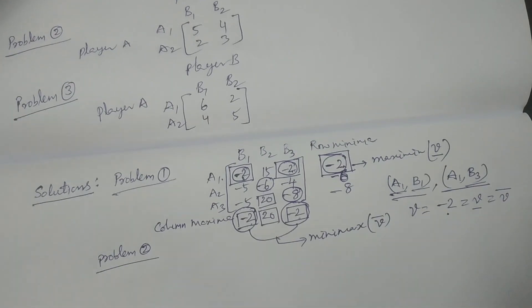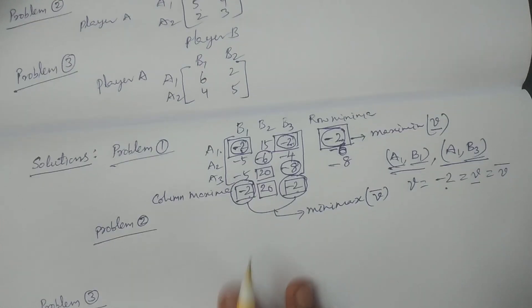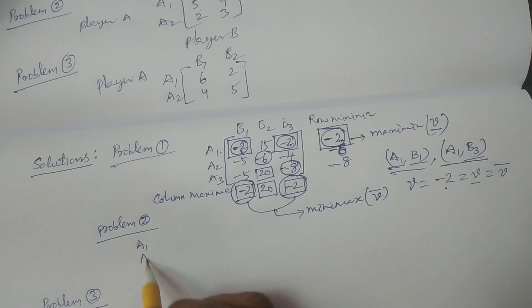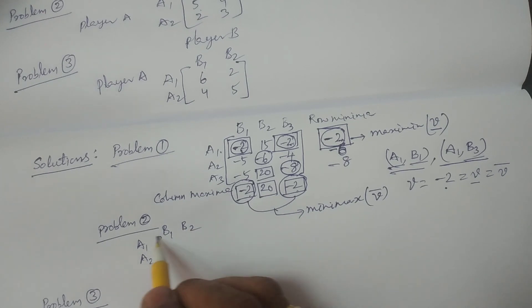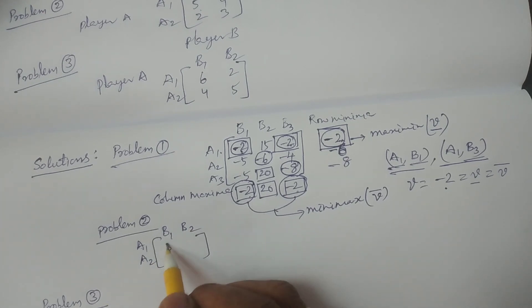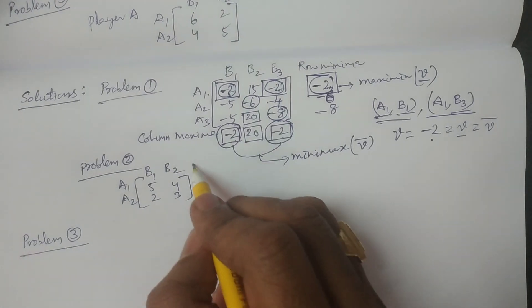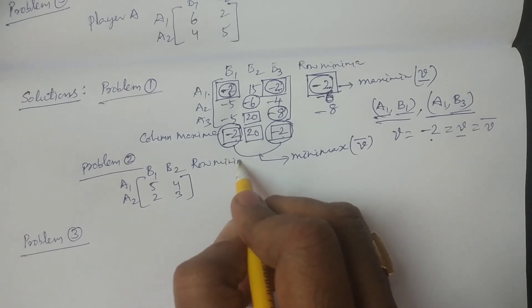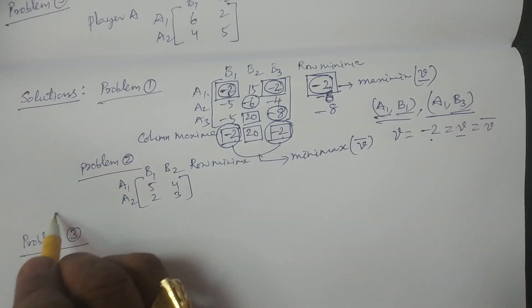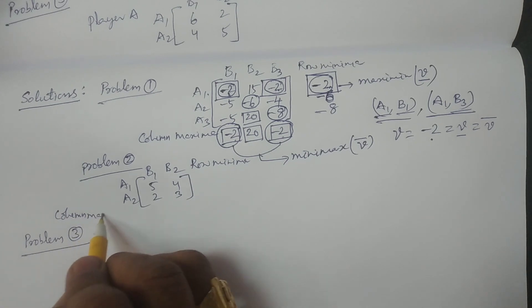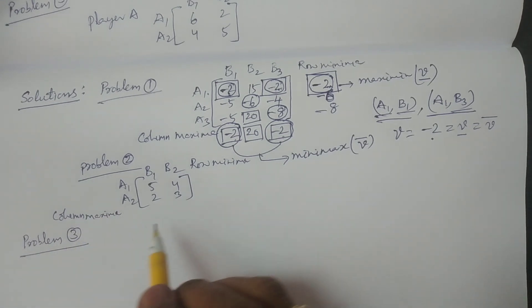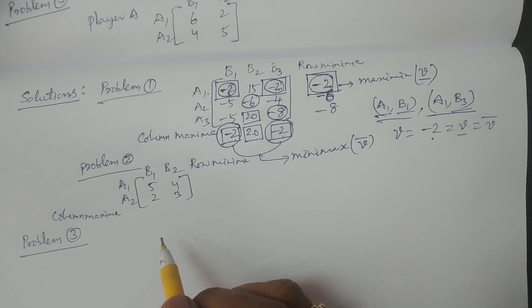Problem 2: we have another matrix — player A has strategies A1, A2 and player B has B1, B2. The payoff matrix is 5, 4 (first row) and 2, 3 (second row). Again, you calculate in the same fashion — first row minima, then column maxima — to check whether a saddle point exists or not, as there are two cases.